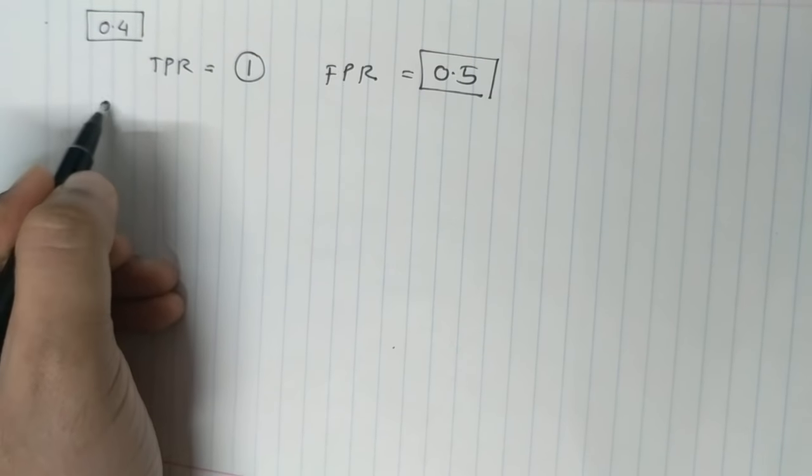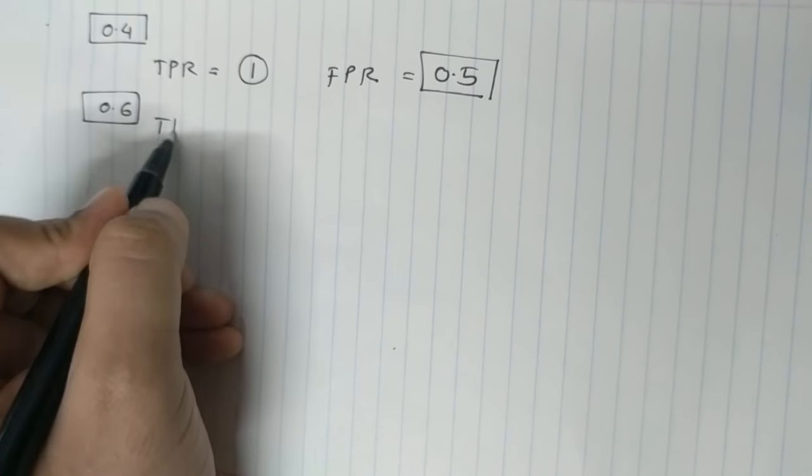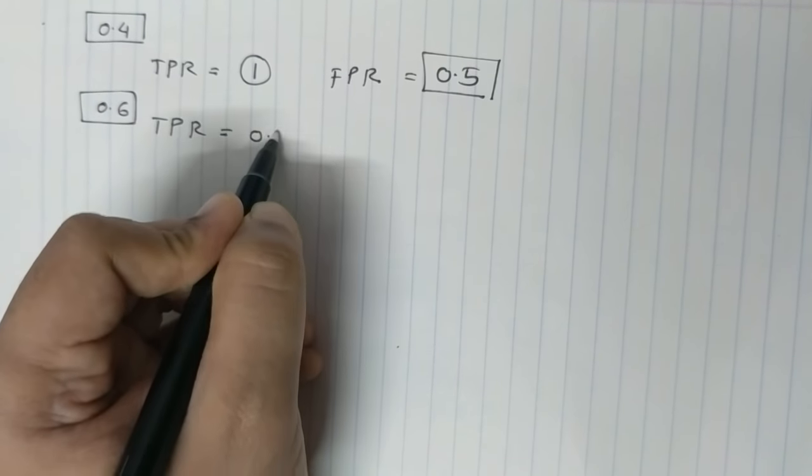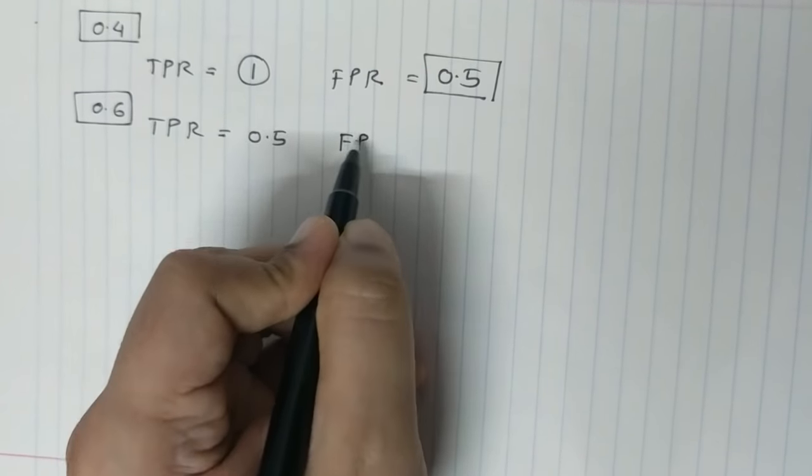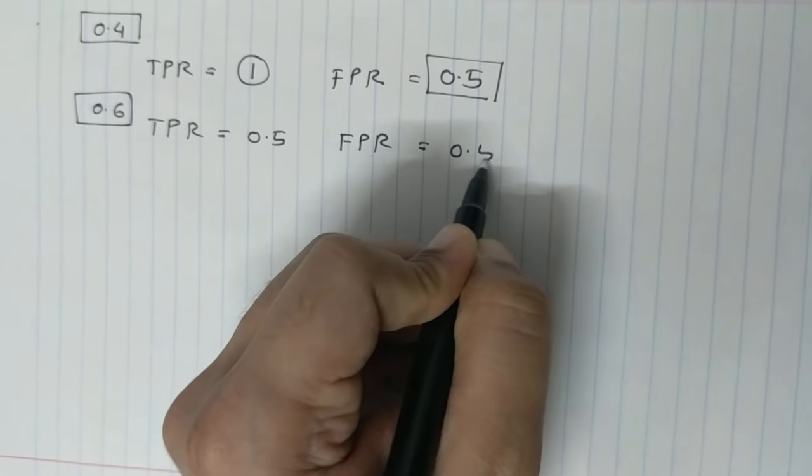At 0.6, we get a TPR of 0.5 and an FPR of 0.5.